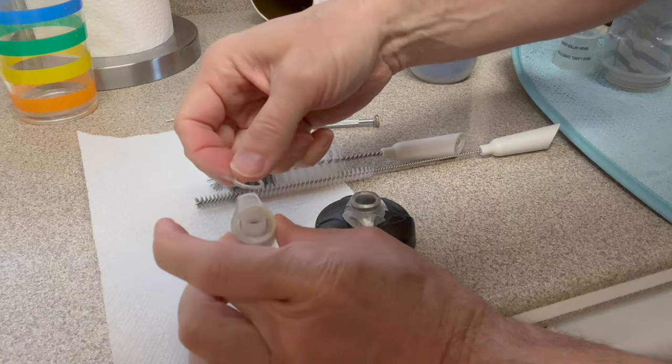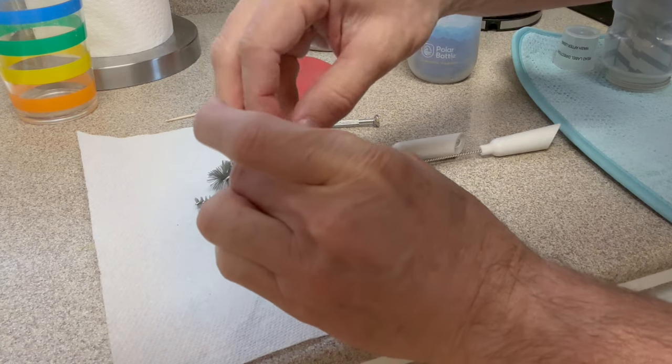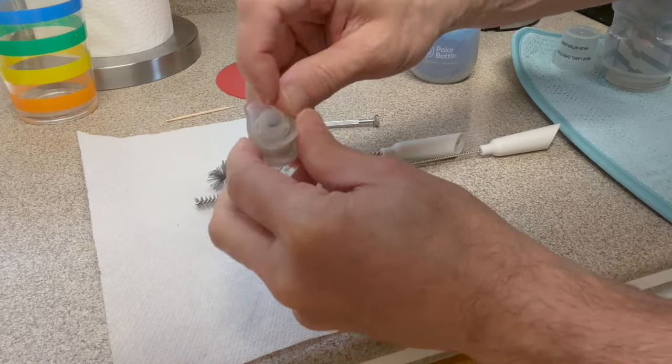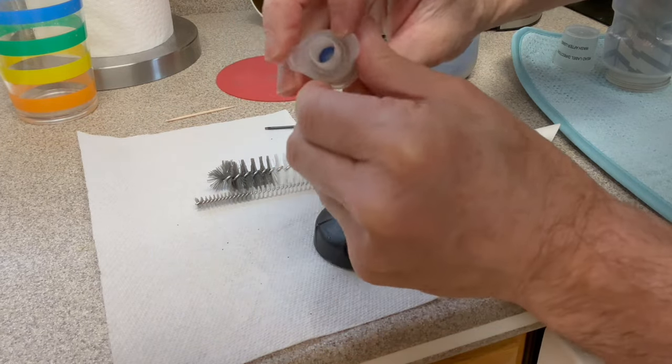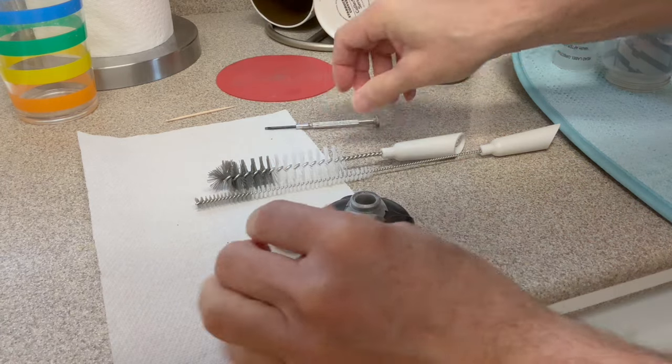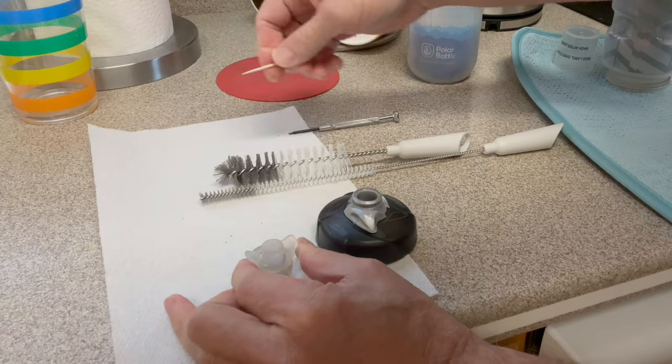Now we want to take our little rubber part and just squeeze it in there. Make sure it passes that tip of the nozzle. Again, with a toothpick or screwdriver—I'll use a toothpick this time—just squeeze one side.